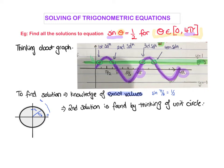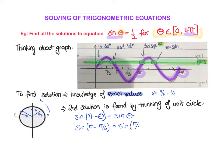So we know that when we have π/6, the sine value equals a half. For the second solution, using the unit circle, we know that sine(π − θ) = sine(θ). So sine(π − π/6) is the same as sine(π/6). Working that out, π minus π/6 gives us 5π/6. So at the moment we've got two answers: the first at π/6, the second at 5π/6.